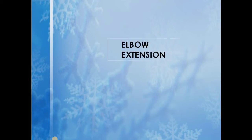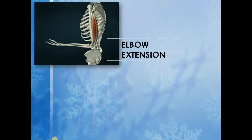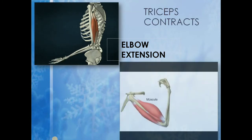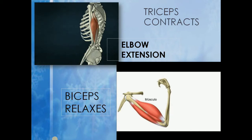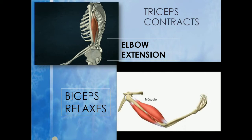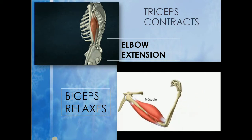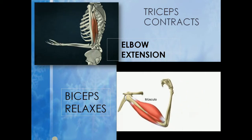During the movement of elbow extension, triceps contracts and biceps relaxes. So for the movement of elbow extension, triceps is agonist and biceps is antagonist. Let me give you some other examples so you can easily understand what I am telling.